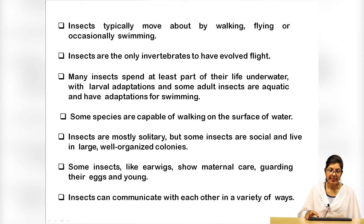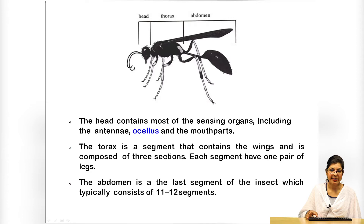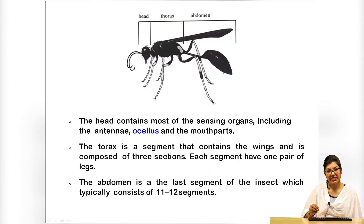The insect body generally consists of head, thorax and abdomen. The head contains most of the sensing organs, which includes antennae, ocelli, and the mouth parts. The thorax is the segment that consists of the wings and is composed of three sections, each segment having one pair of legs. The last part is the abdomen, which typically consists of eleven to twelve segments.